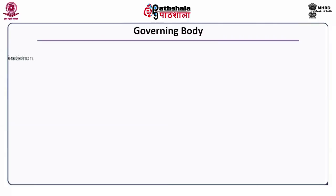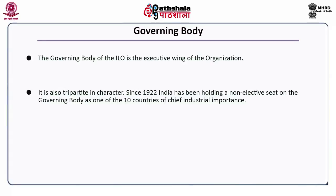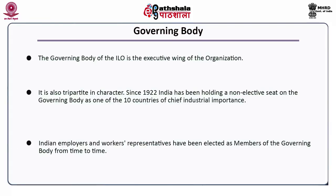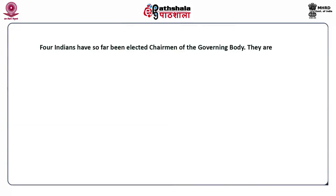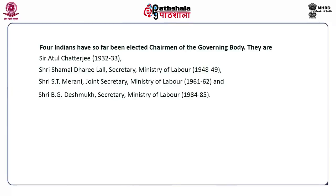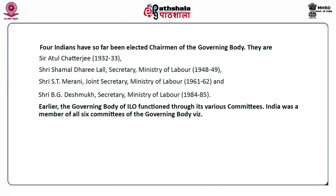The Governing Body of the International Labour Organization is the executive wing of the organization. It is also tripartite in character. Since 1922, India has been holding a non-elective seat on the governing body as one of the ten countries of chief industrial importance. Indian employers and workers representatives have been elected as members of the governing body from time to time. Four Indians have so far been elected chairman of the governing body: Sir Atul Chatterjee, Shri Shamal Dharilal, Shri S.T. Mirani, and Shri B.G. Deshmukh. India was a member of all six committees of the governing body.